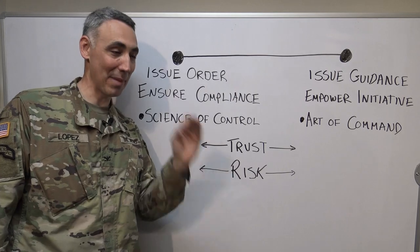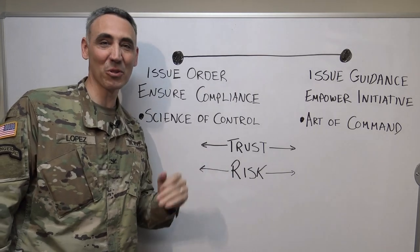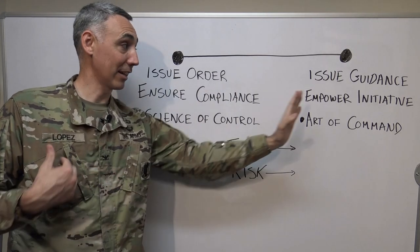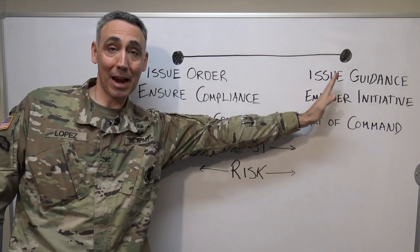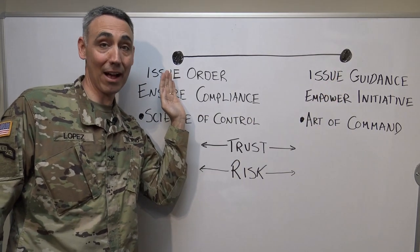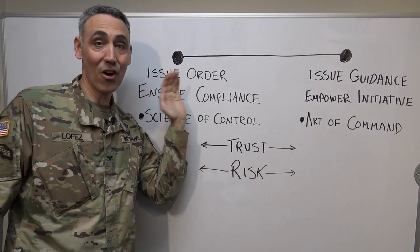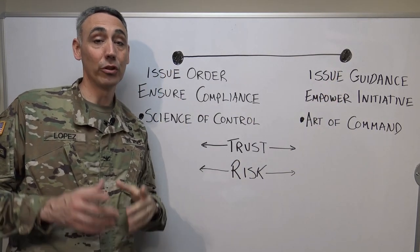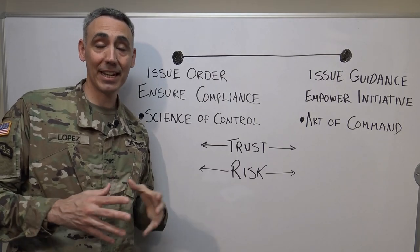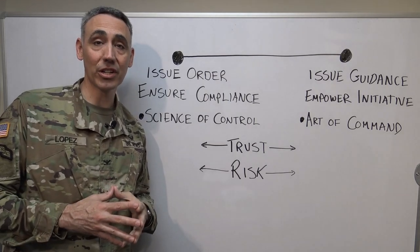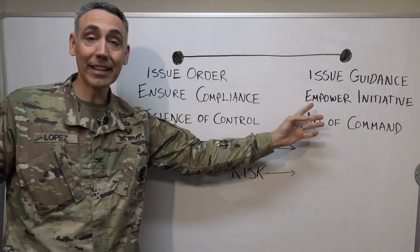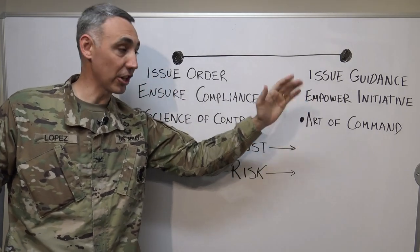Number five: if you're a commander, control your staff. Staffs love to operate on the compliance side — they love to issue orders to companies and make sure every order is followed. You've got to check your staff. You might be operating on the empowerment side as a commander, but your staff might be firing out orders on the compliance side. You've got to control that.